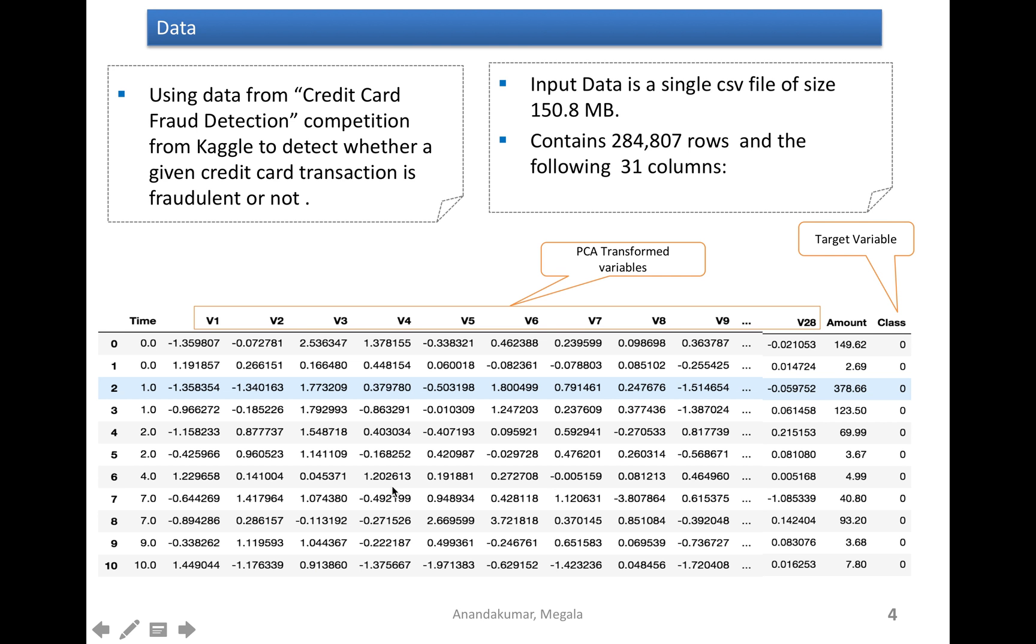Here is the data. The author of this data actually transformed most of the variables into PCA components. The variables V1 to V28 are PCA transformed variables and they have added the original variables time and amount. In addition, they have added the variable class which is actually telling whether the transaction is a fraud or not.